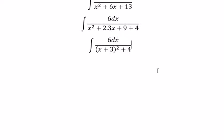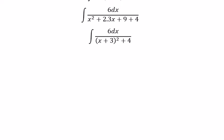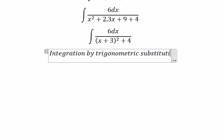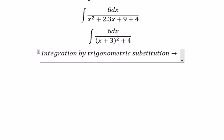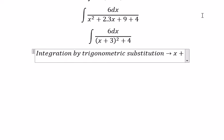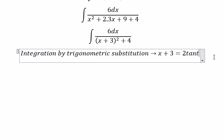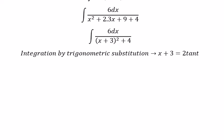And now we can use integration by trigonometric substitution. So we put x plus 3 equals to 2 multiplied by tan t. And then we got dx equals to 2 secant squared t dt.